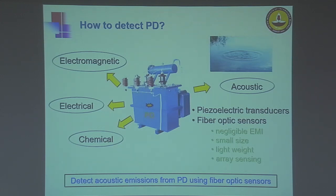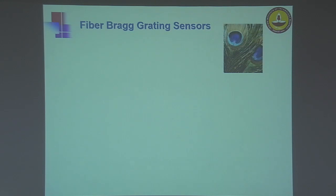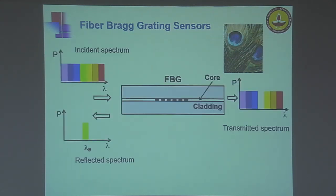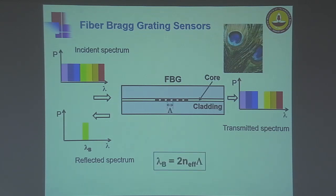The specific fiber optic sensor we focus on is the fiber Bragg grating sensor. The inspiration for fiber Bragg grating sensors comes from nature — the beautiful colors of a peacock feather are actually different colors reflected due to the microstructure grating in these structures. In a similar way, if we have a periodic structure inside the core of an optical fiber, we achieve what is known as a fiber Bragg grating. The grating is characterized by a specific color being reflected when excited with a broad band of colors, while all other colors are transmitted through.